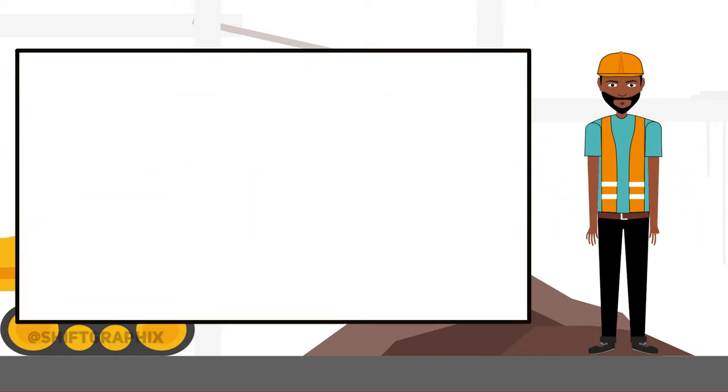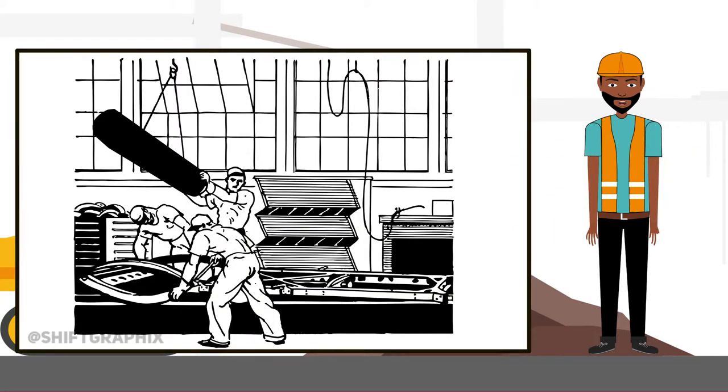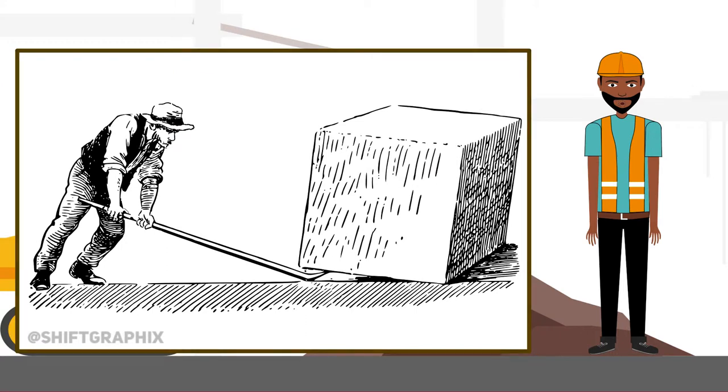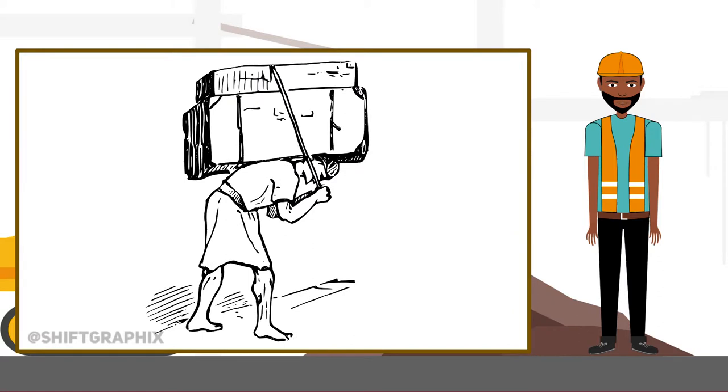A long time ago, people who worked in big factories used to have a difficult time moving items from one point to another. The workers spent a lot of time just moving one item because it was heavy, and there was no other way of moving them apart from the manual way.